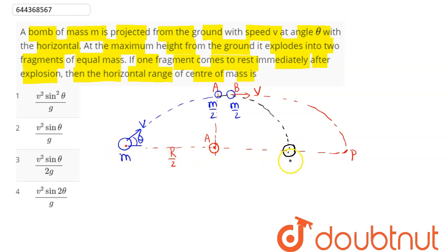Since no external force is acting on the system, therefore center of mass will land at that position which is equal to r, the range of the particle, which is v square sine 2 theta by g. Option 4 is the correct answer. Hence 4 is our answer.